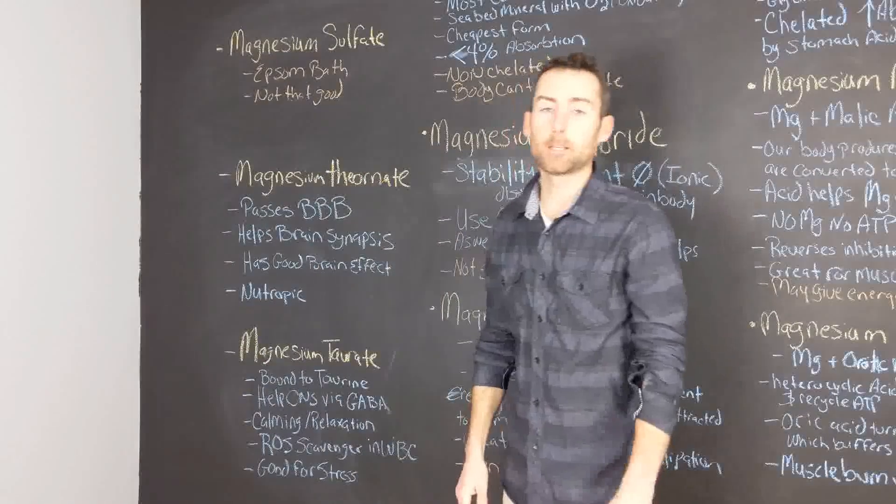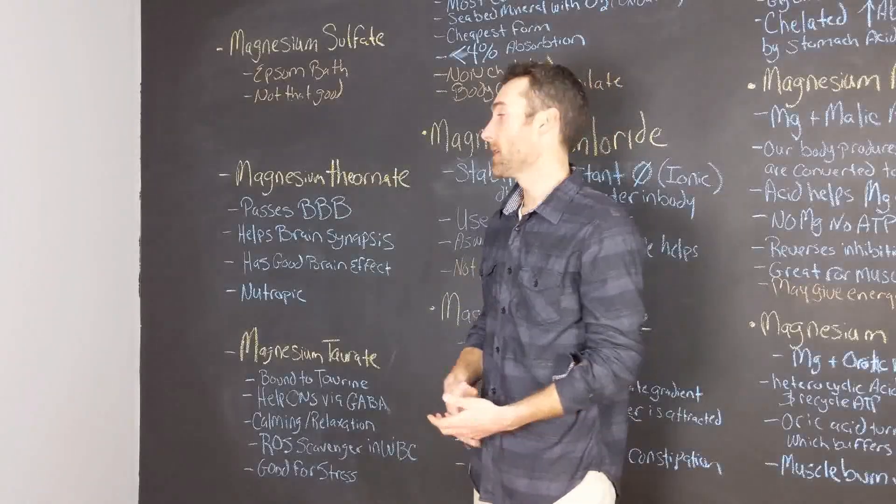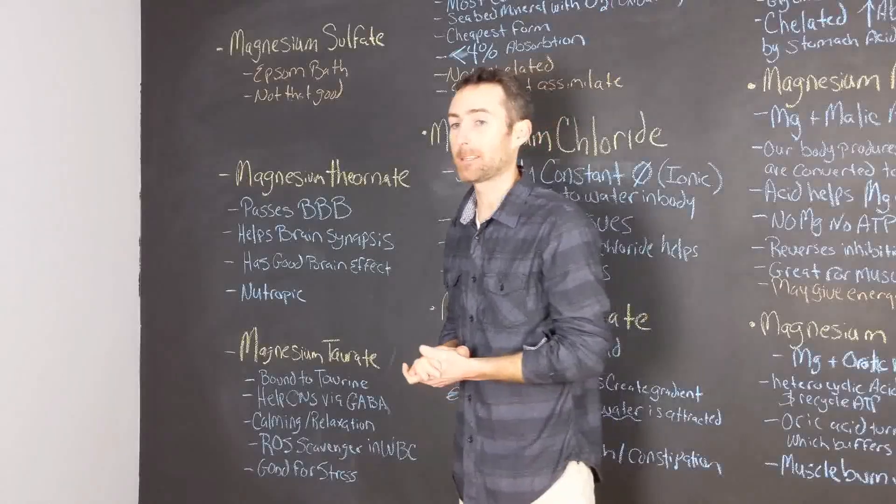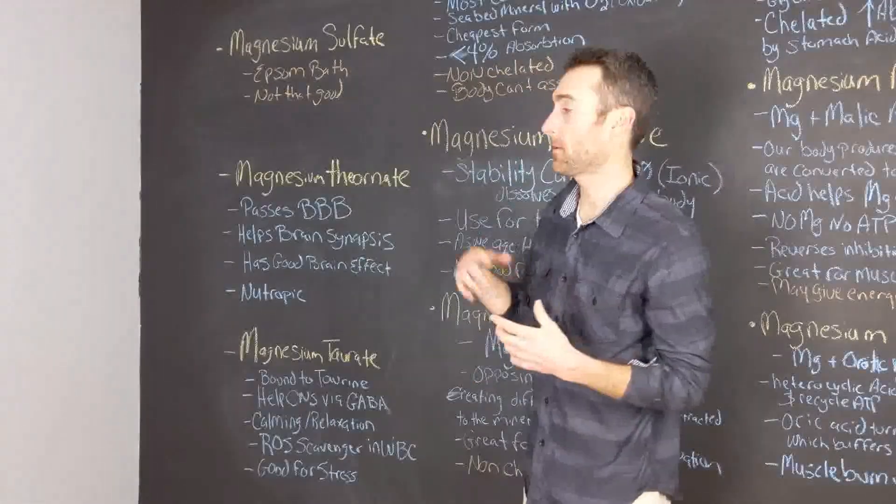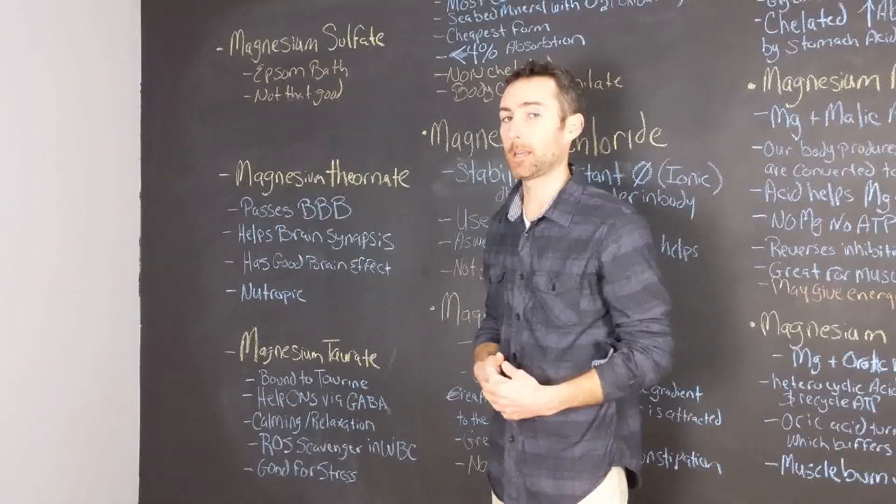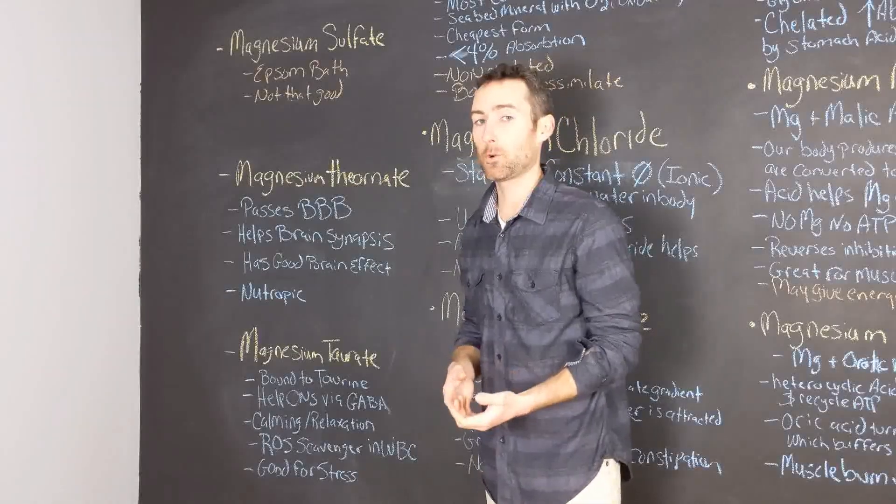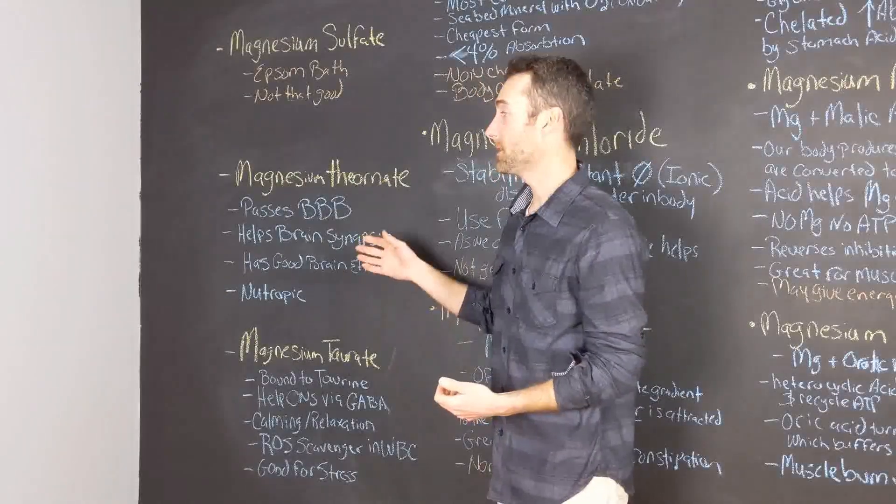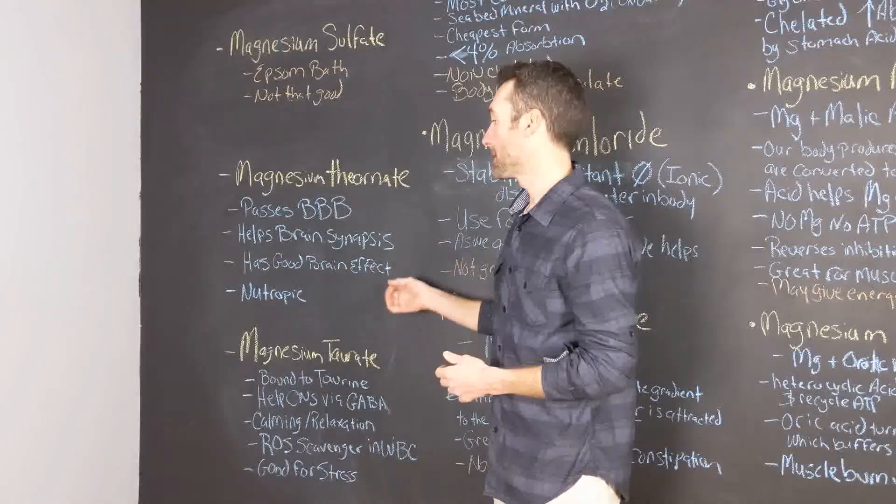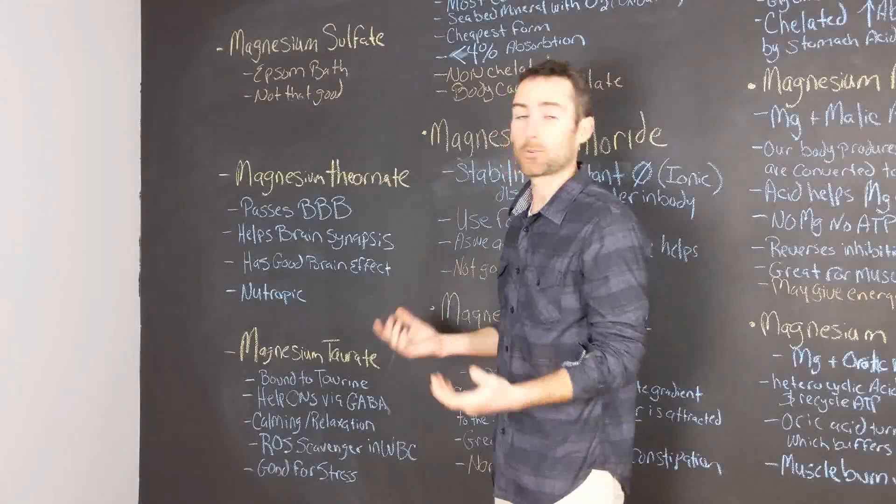Last form of magnesium I want to talk to you about is magnesium threonate. Magnesium threonate is a new form of magnesium or a newer form of magnesium, and it has a lot of special advantages over all of the other magnesiums that we talked about. Magnesium threonate actually has the ability to pass the blood brain barrier, making it a powerful nootropic and a really good form of magnesium for cognitive benefits. A lot of people are using this right now to boost their brain synapses.